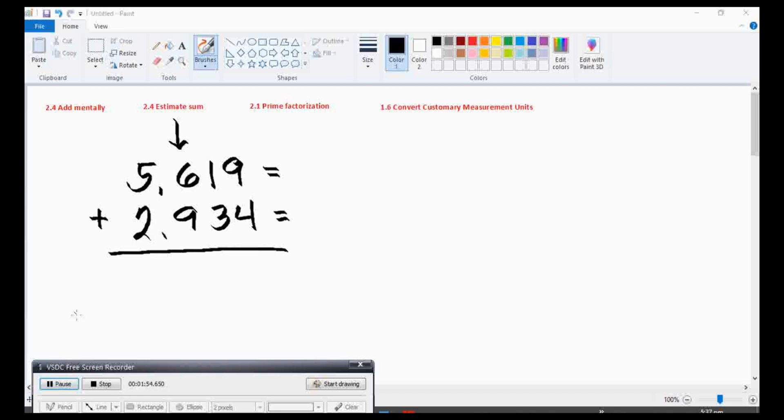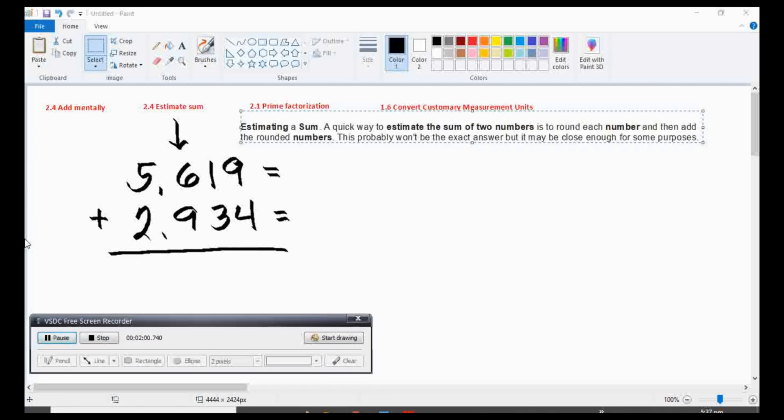Good day grade 4! Today, we will learn estimate sum. Estimating a sum, it is a quick way to estimate the sum of two numbers is to round each number and then add the rounded numbers. This probably won't be the exact answer, but it may be close enough for some purposes.